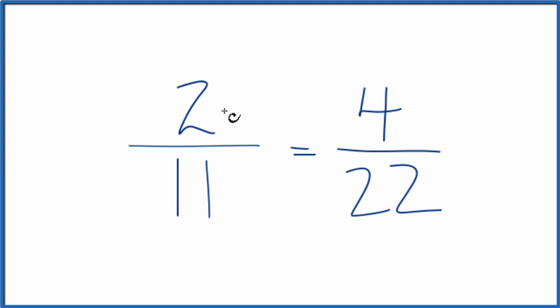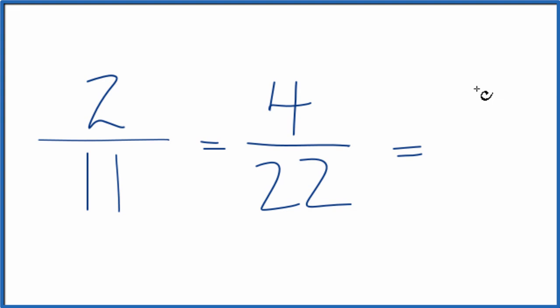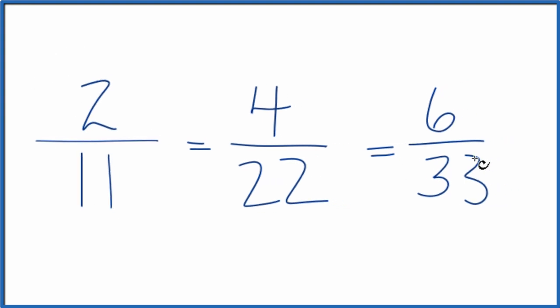We could also take and multiply the numerator by 3 and the denominator by 3. 2 times 3 is 6. 3 times 11 is 33. That's another equivalent fraction for 2 elevenths.